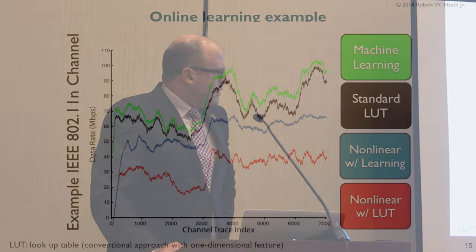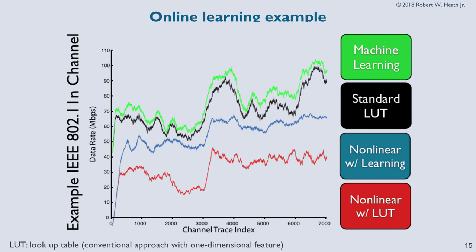This is an example simulation with two cases. One has the standard lookup table — the best one-dimensional, ESM approach — and then our supervised learning approach. The x-axis is channel trace index over time, and y-axis is data rate. The machine learning approach outperforms the lookup table. Both approaches had the lookup table designed under the assumption of no impairments. When we ran it again with the Rapp non-linear amplifier model, the lookup table approach broke down quite a bit — losing about a factor of two in performance — whereas our learning approach did considerably better.